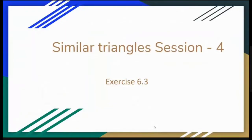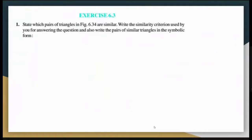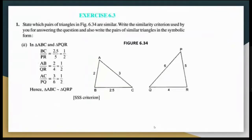Good morning, everyone. We are back with the fourth session of similar triangles for class 10. We'll be doing exercise 6.3 now. See question number 1: State which pairs of triangles in figure 6.34 are similar. Write the similarity criterion used and also write the pairs of similar triangles in symbolic form. Have a look at figure 6.34.